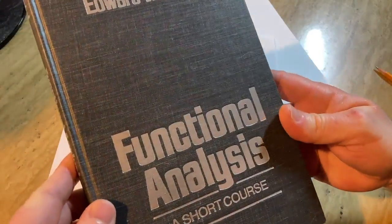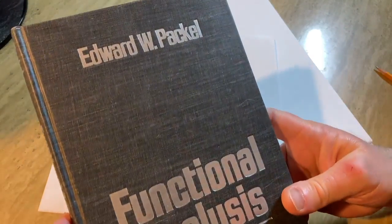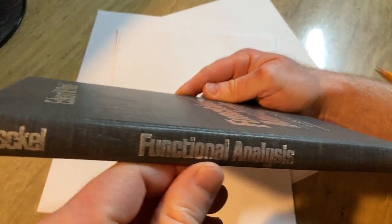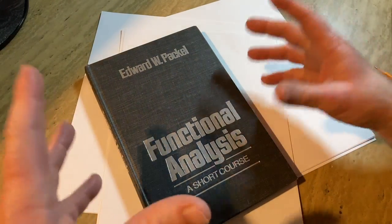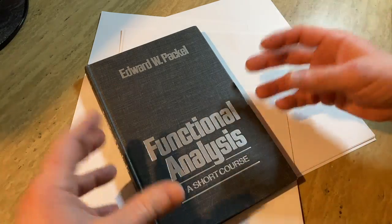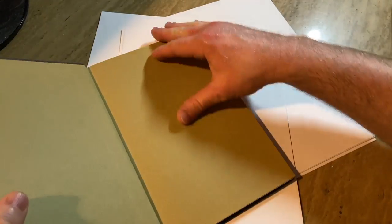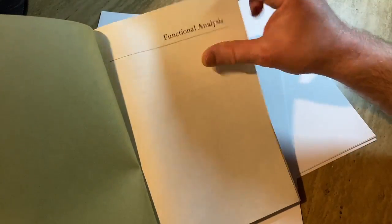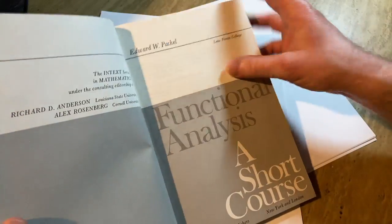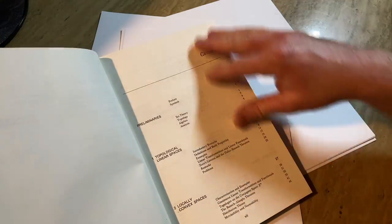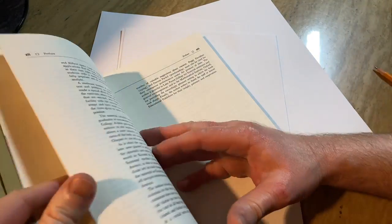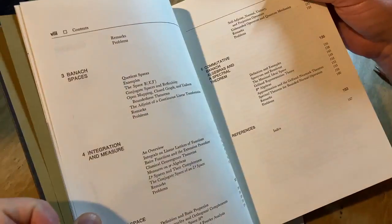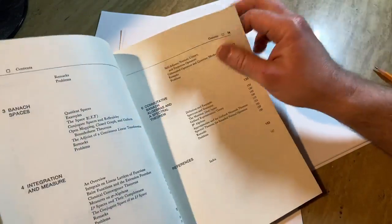So this book is called Functional Analysis, a short course, and it's by Edward W. Packel. And I haven't really looked at this book too much, to be honest. So we're going to open it up and let's just try to explain some of the mathematics. Really nice book. And let's just go straight to the math. So here we've got the contents. We'll go briefly, but I want to jump into the mathematics right away to actually show you how you can learn mathematics.